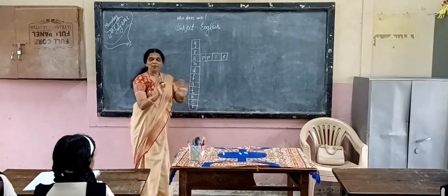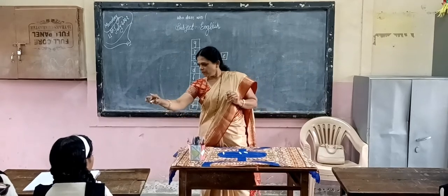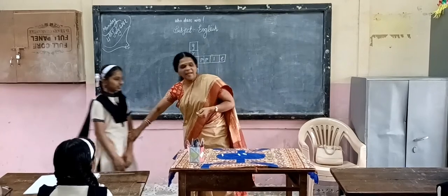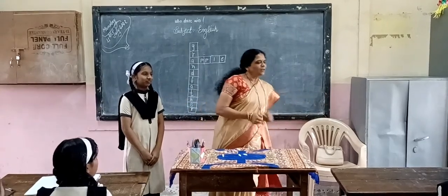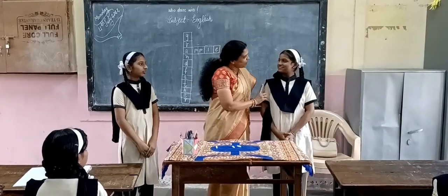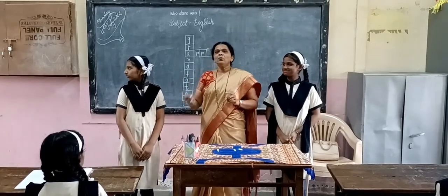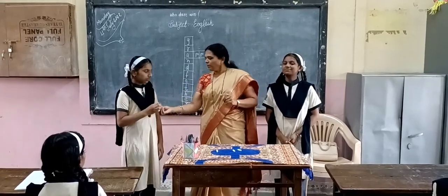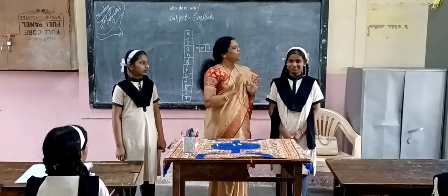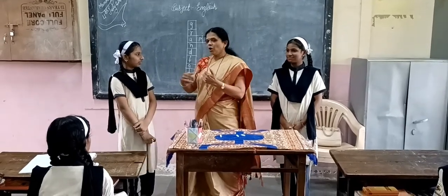Now we will make two groups of this class. Group one, come here. What is your name? Shreya — your group will be A group. What is your name? Ishika — your group is B. A and B. Now one girl will come and write the word for A, and then B. You can call anyone in your group, you can take help of your group. Okay?